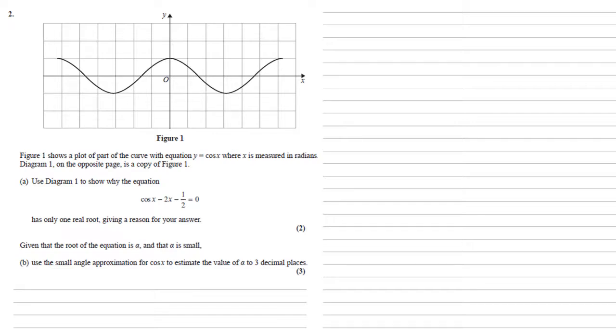Figure 1 shows a plot of part of the curve with equation y equals cos x, where x is measured in radians. We want to use Figure 1 to show why the equation cos x minus 2x minus one half equals zero has only one real root, and we need to give a reason for our answer.